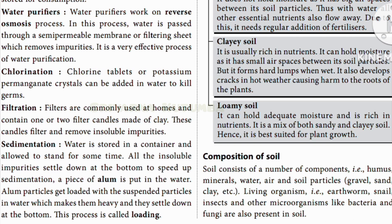Chlorine tablets or potassium permanganate crystals can also be added to water to kill germs. This is also a reliable method. Filters commonly used at home contain one or two filter candles made of clay which filter out insoluble impurities.